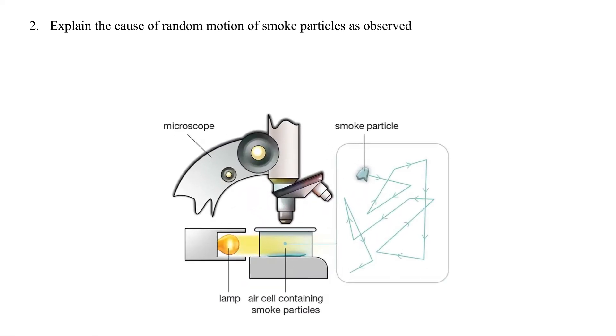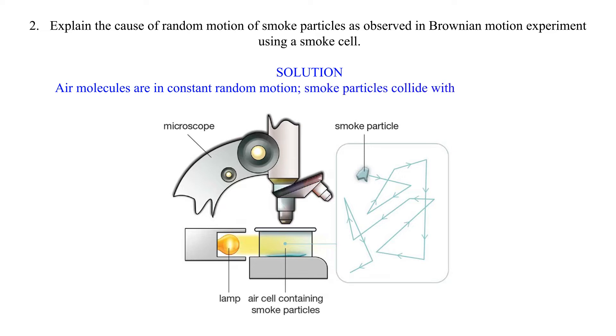Question 2: Explain the cause of random motion of smoke particles as observed in Brownian motion experiment using a smoke cell. Solution: Air molecules are in constant random motion. Smoke particles collide with these air molecules, hence their random motion.